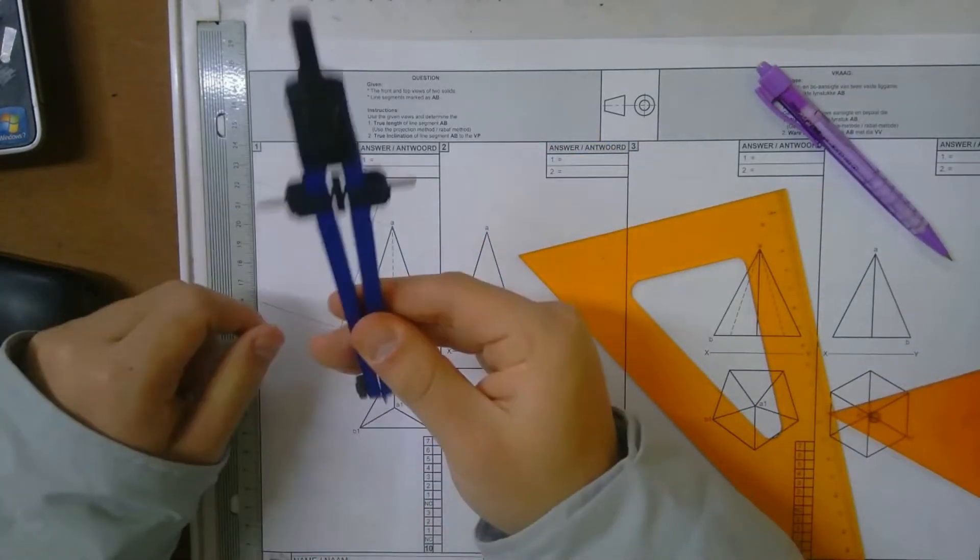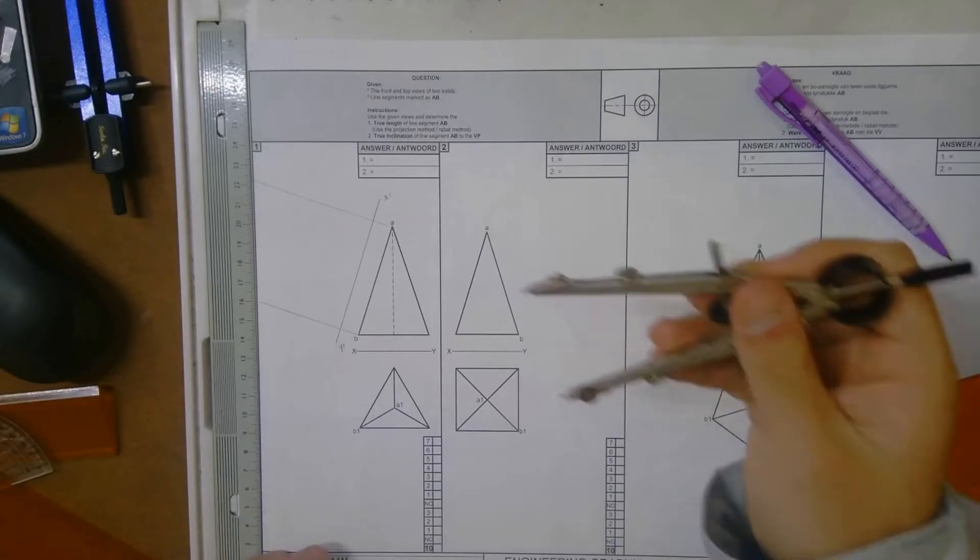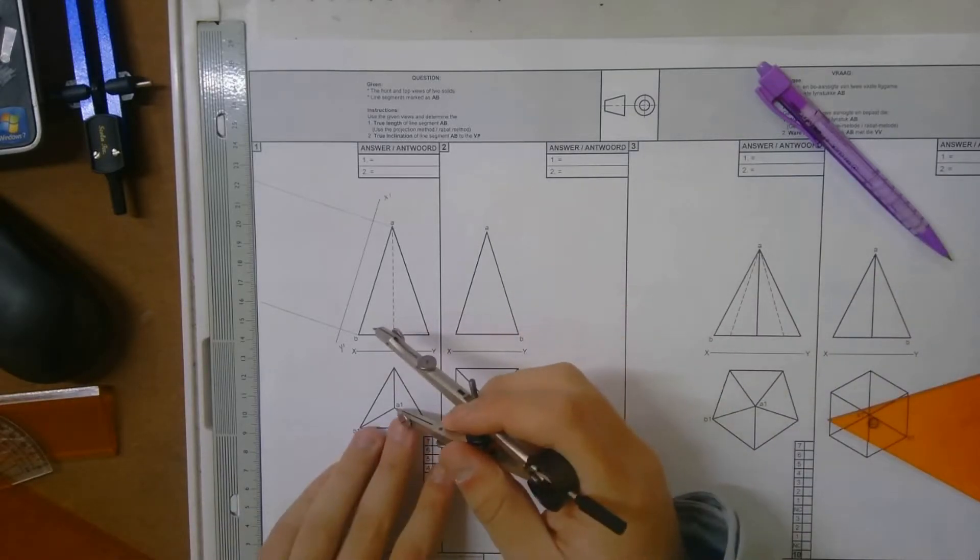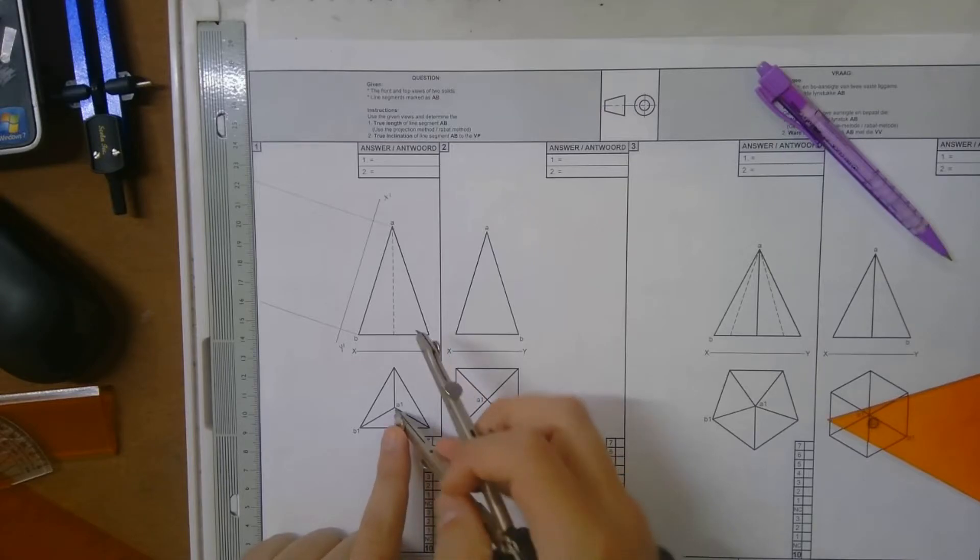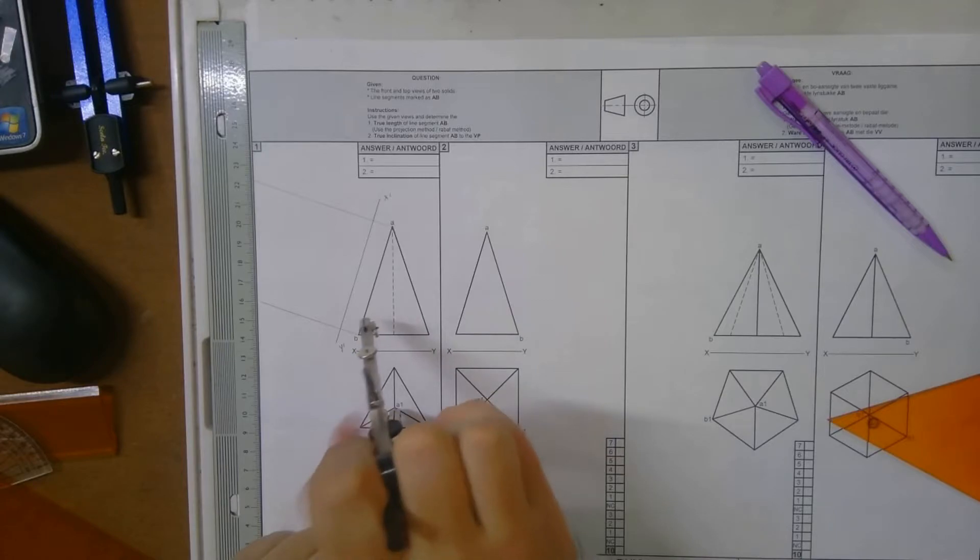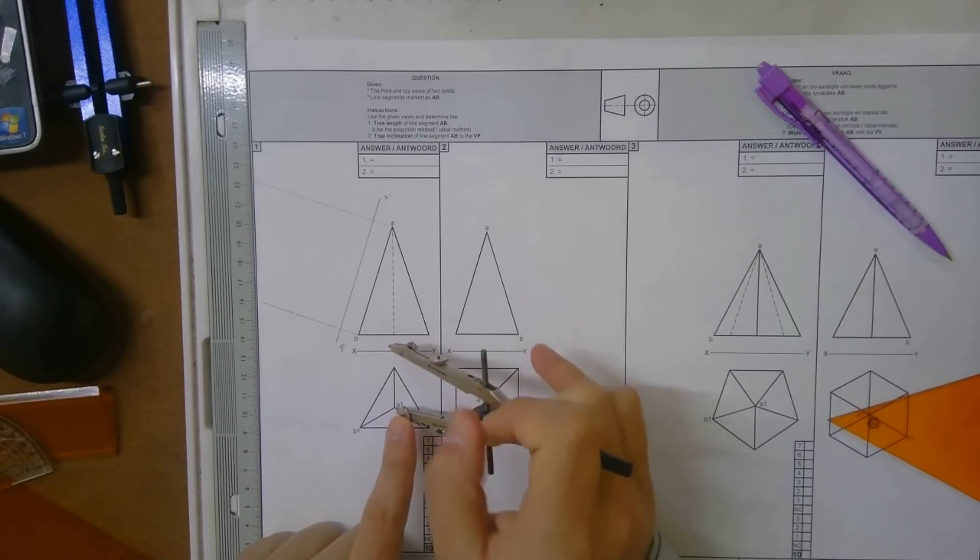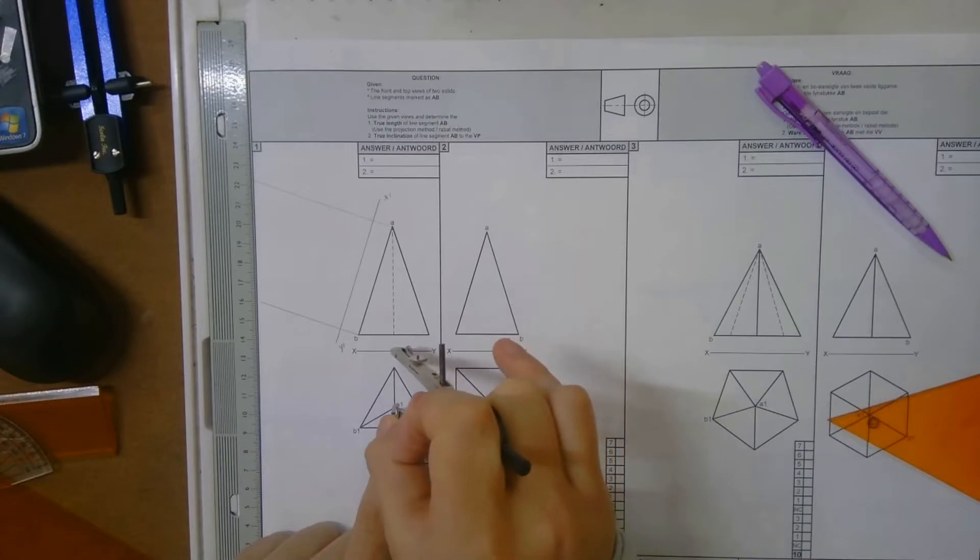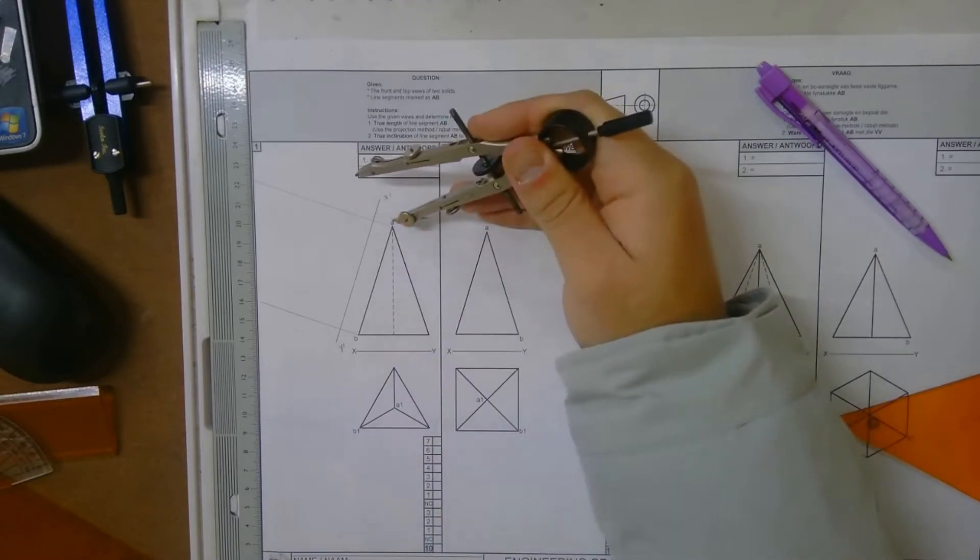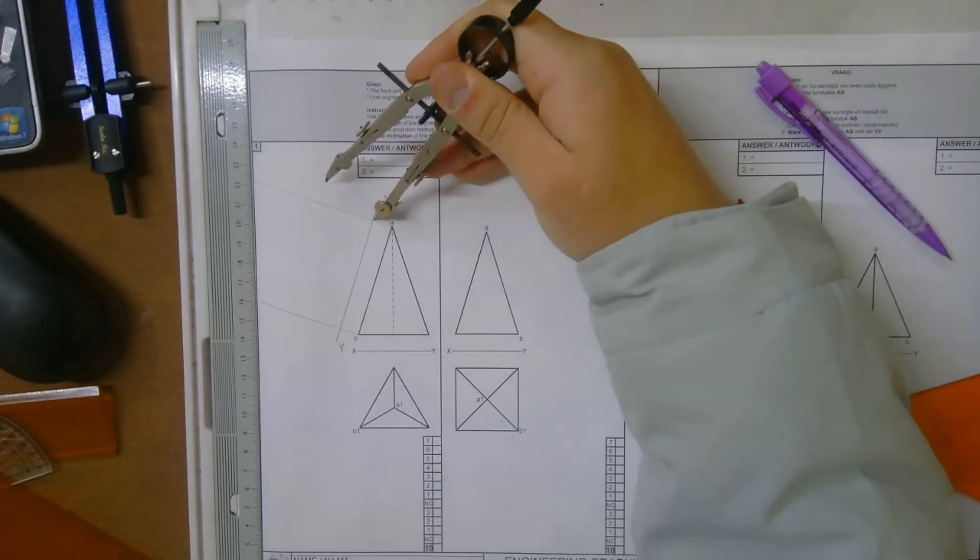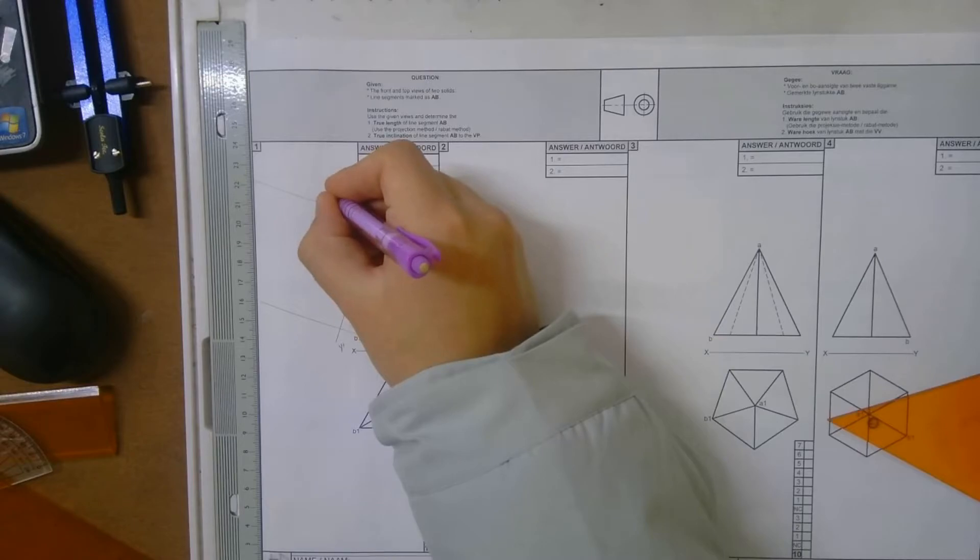So now we have those 90-degree lines. Now what we want to do is take our compass. We're going to set it, so now we're going to be setting it from A. We put the metal point, we put the metal point here on A1 and we measure it down to the XY line. So now I measured A to the XY line, so I go to A at the top here. We put the metal point on the XY line and we mark off over there and we label that A2.